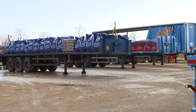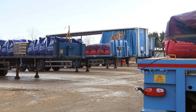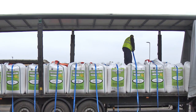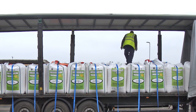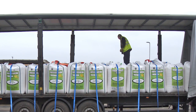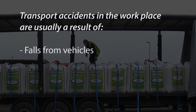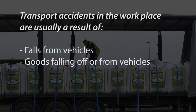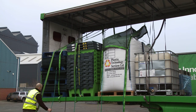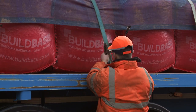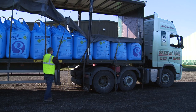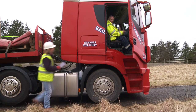Responsibility for the load starts with the consigner. It's important to assess and manage the risks of loading vehicles, as many preventable accidents occur during loading and unloading. Transport accidents in the workplace are usually a result of falls from vehicles, goods falling off or from vehicles and hitting someone, or slips or trips. Taking simple steps to deal with these types of accidents can reduce injuries and also reduce delays and product damage.